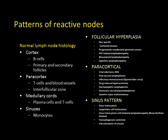When talking about reactive lymph nodes in real life and for the boards, first you determine whether a lymph node is benign or malignant. If it's benign, you need to suggest why the patient might have a prominent lymph node. In classifying reactive conditions, we look at different patterns: if follicles are increased in number, that's follicular hyperplasia; if the paracortex is expanded, that's paracortical hyperplasia; and if the sinuses are expanded, that's the sinus pattern — each with its own differential diagnosis.